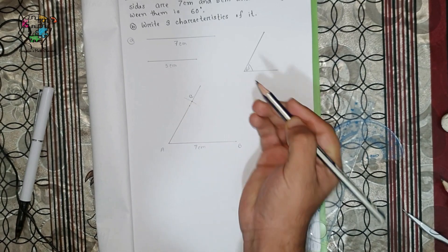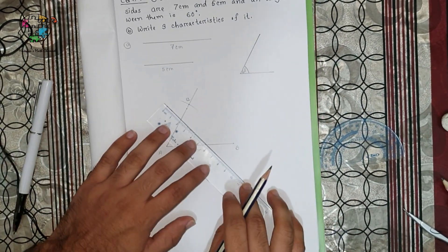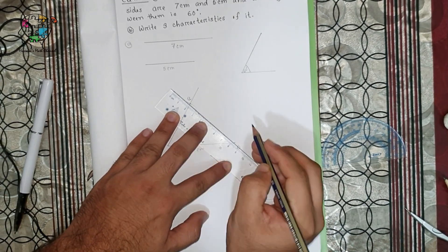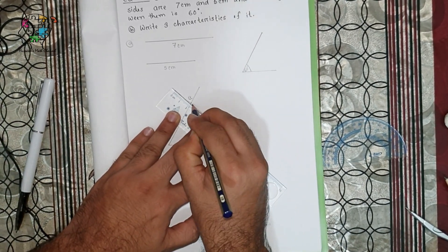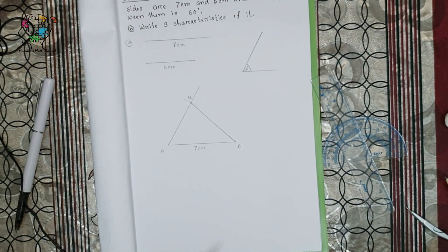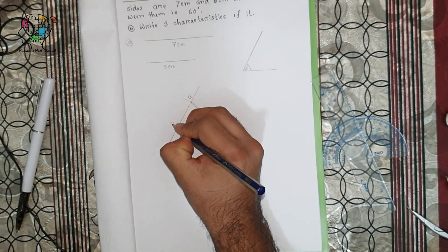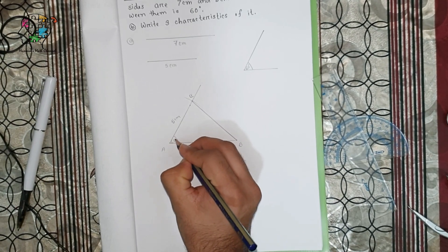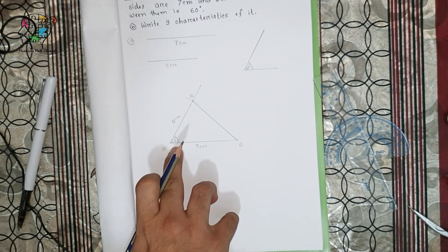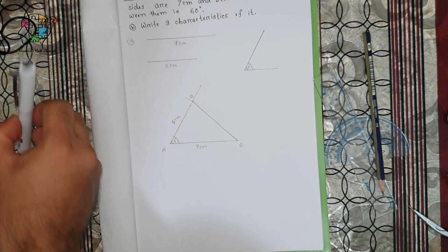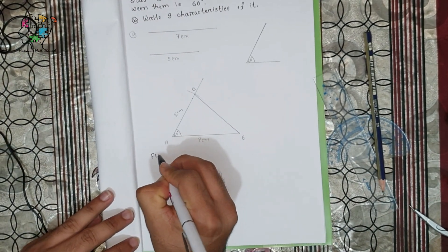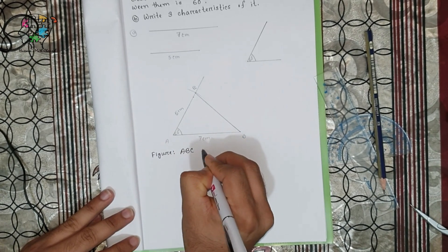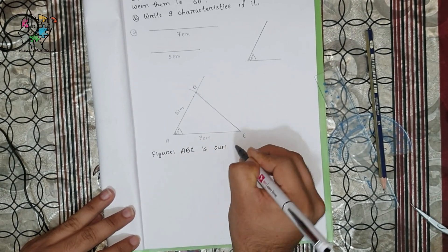Now if we connect C and B together it will be our required triangle. Here you can see this is 7 centimeters, this is 5 centimeters, and this angle is 60 degrees. Now you can write here: figure ABC is our required triangle.